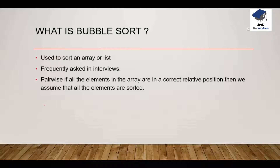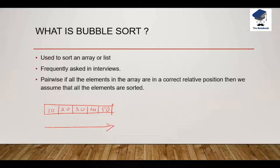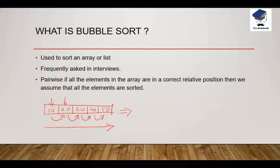What does it mean? Consider we have an example array: 10, 20, 30, 40, and 50. Now suppose we are going in ascending order. If we compare pair-wise — 10 and 20 — since 10 is less than 20, 10 is on the left side and 20 is on the right side. So we assume 10 is in its correct relative position and 20 is also in its correct relative position. We will do the same with 20 and 30, 30 and 40, and 40 and 50. Doing so, we will find that all elements are in their correct relative position, so we consider this a sorted array.